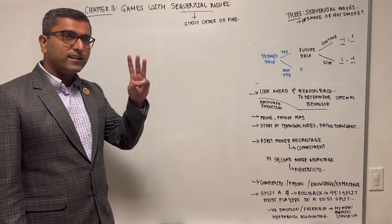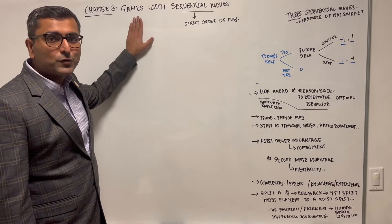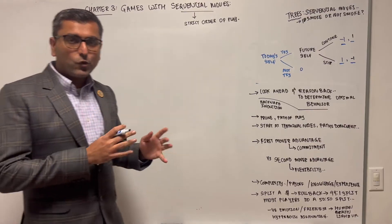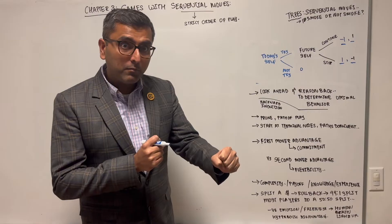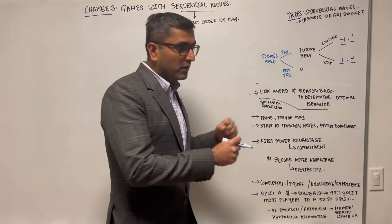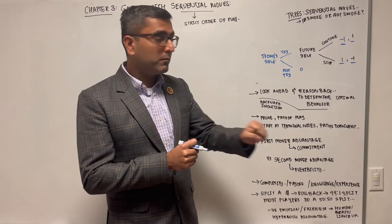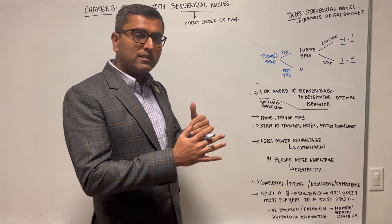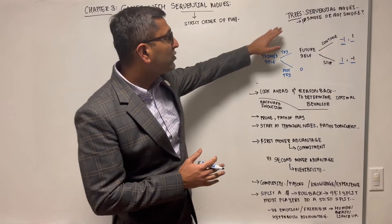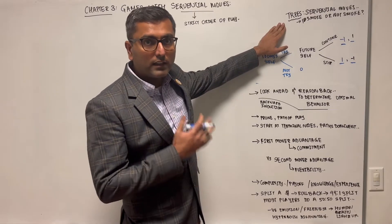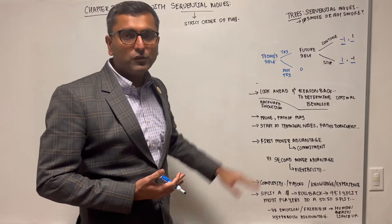Chapter 3: games with sequential moves. When there is a strict order in which players move — first player moves, then the second player moves, then the third — or two players take turns in a strict sequence, we can use trees to solve these types of games.